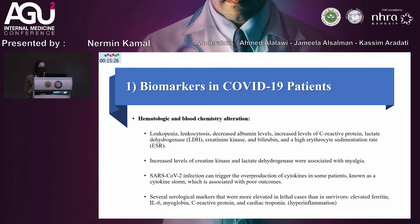Biomarkers include lymphopenia, leukocytosis, decreased albumin, and increased levels of CRP, procalcitonin, and LDH — all used when hospitalizing a COVID-19 patient. Elevated cytokine levels are also used to determine poor outcomes. Markers such as elevated ferritin, interleukin-6, myoglobin, CRP, and cardiac troponin indicate hyperinflammation syndrome and are associated with low survival.